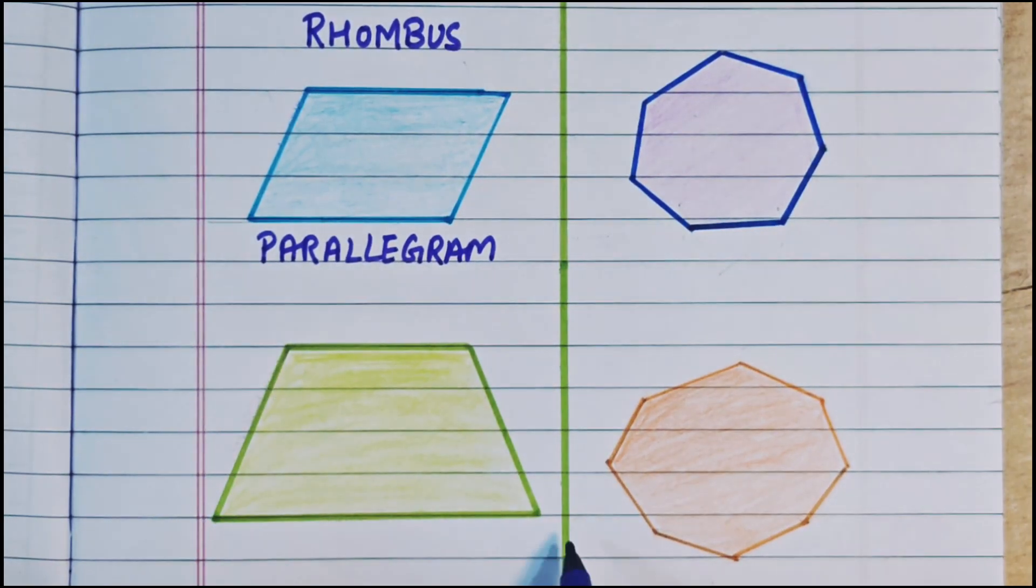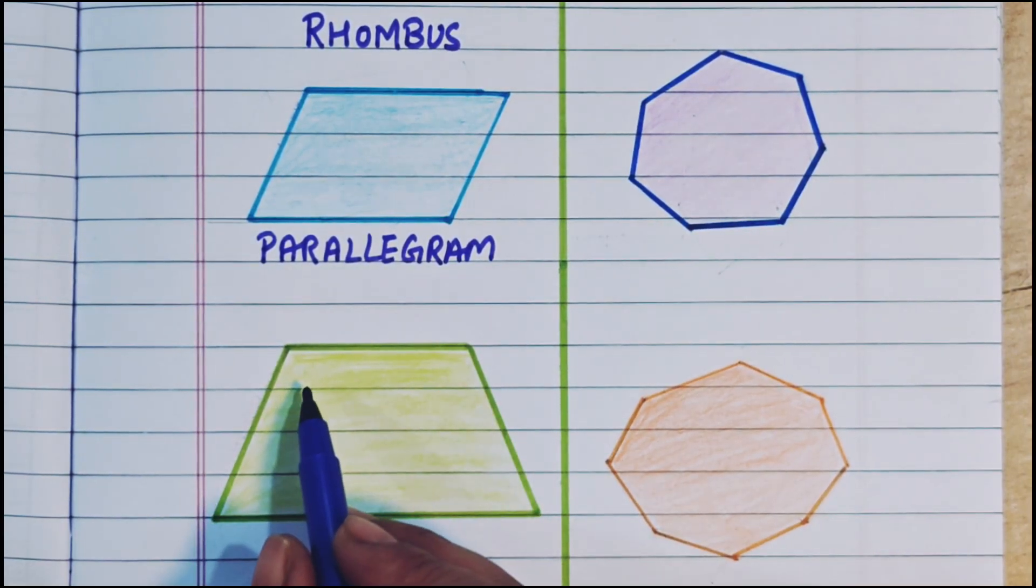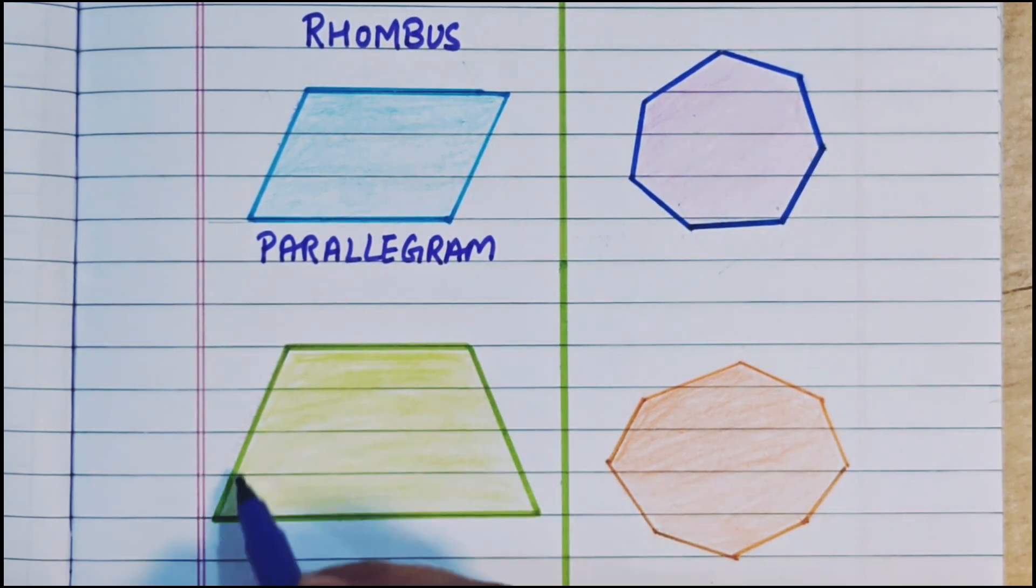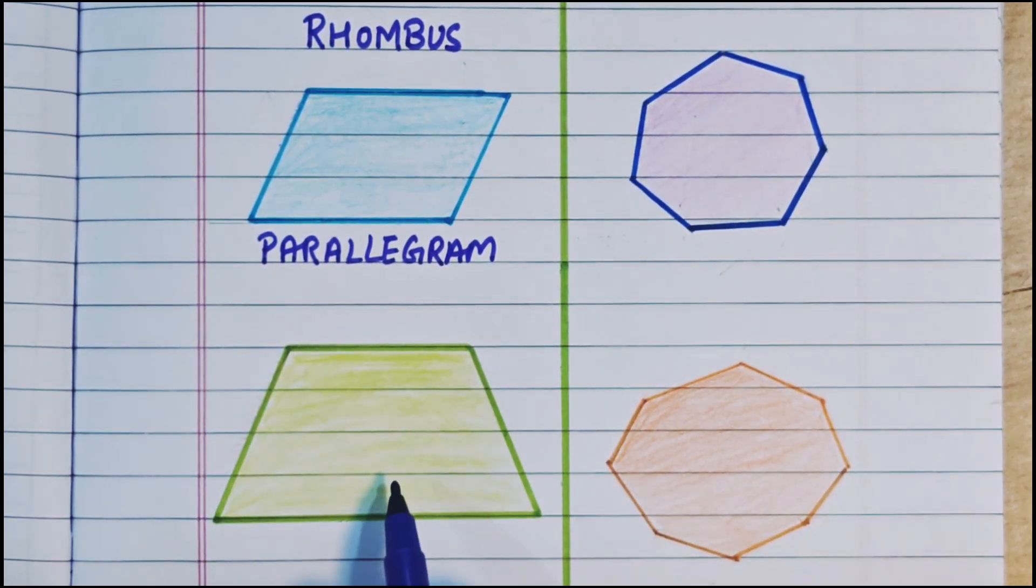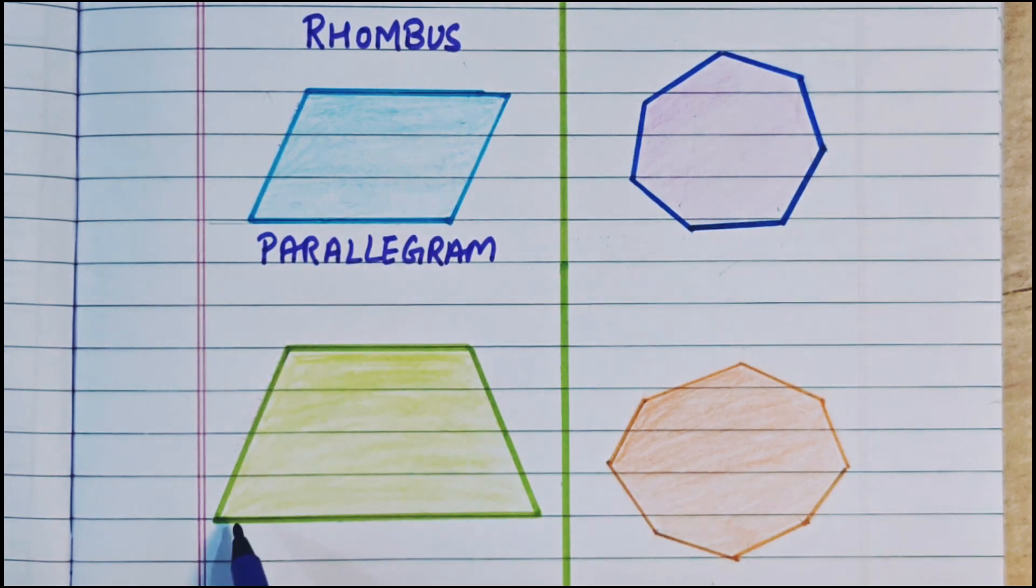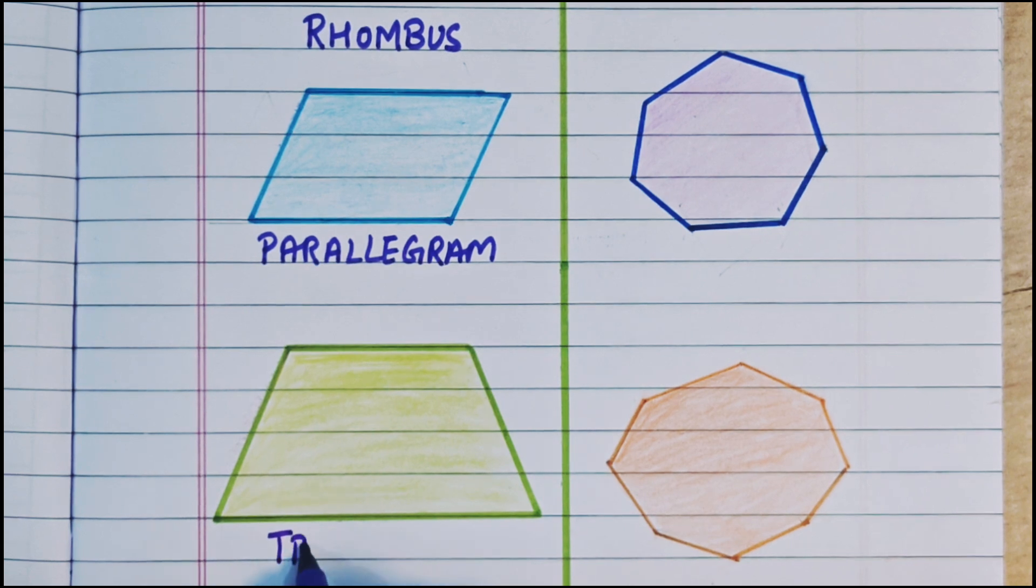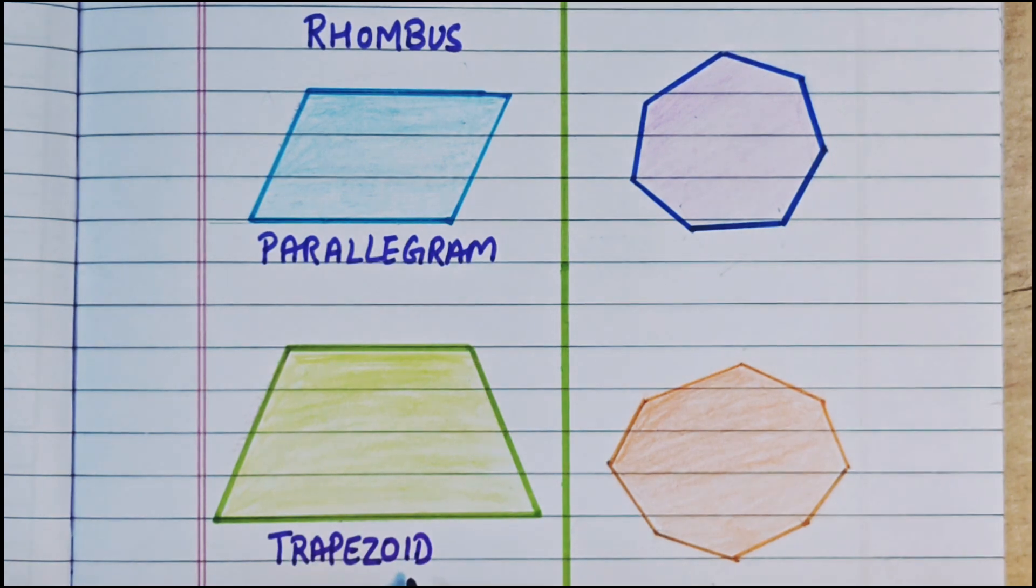Now next shape. Again it has 4 sides, but they are not parallel to each other. One is smaller and one is longer. This is a trapezoid. T-R-A-P-E-Z-O-I-D. Trapezoid.